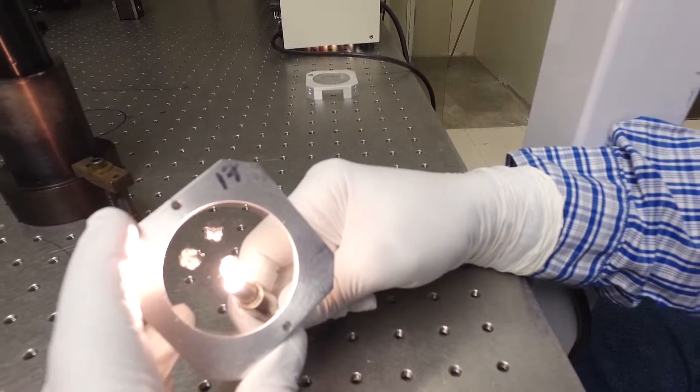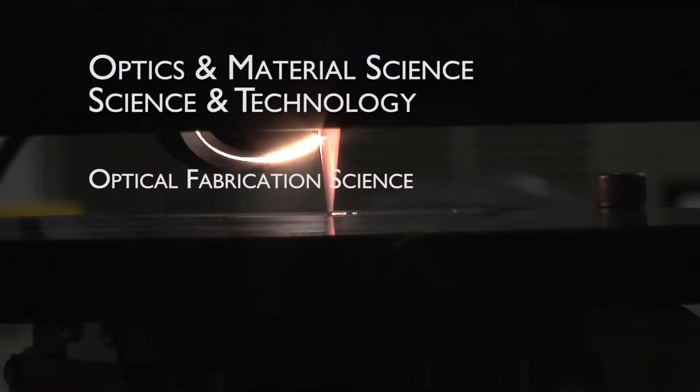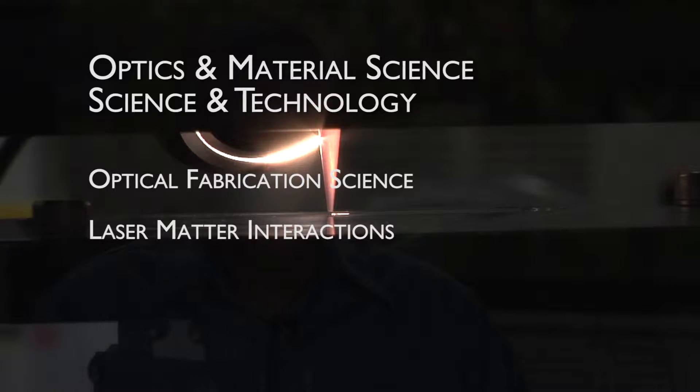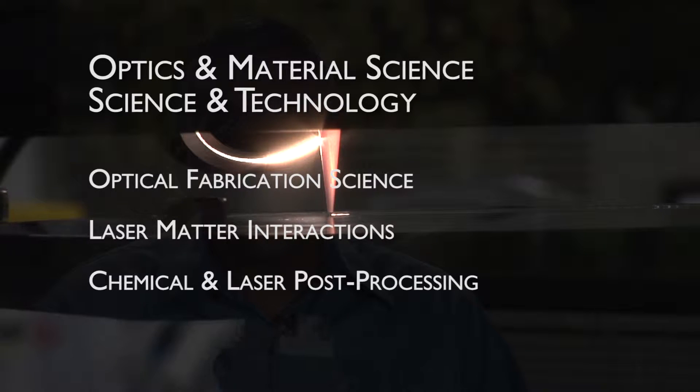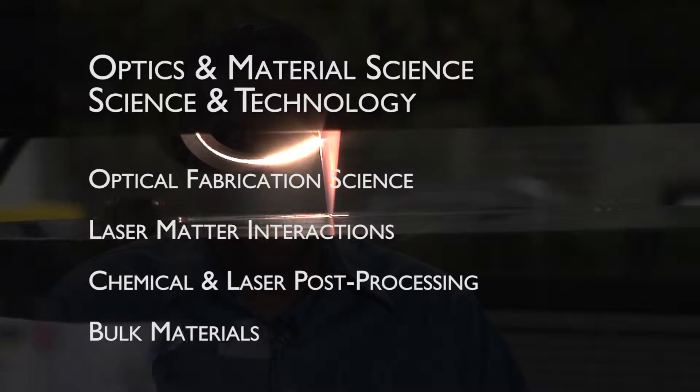Our S&T focuses on four major areas: optical fabrication science, laser-matter interactions with a focus on damage science, chemical and laser post-processing of optics, and finally bulk materials and the creation of new materials for use as optics.